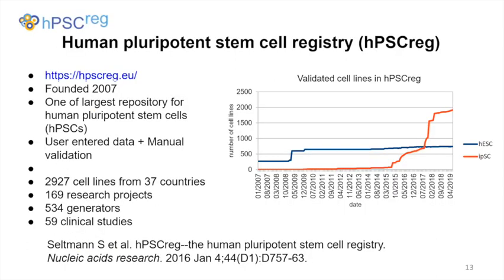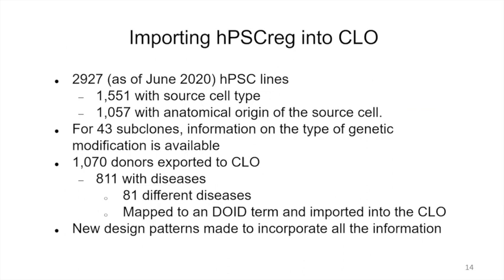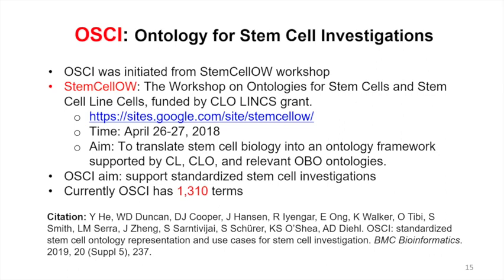With that resolved, we could add a large number of stem cell line cells into the Cell Line Ontology. We have been working with the Human Pluripotent Stem Cell Registry from Germany, with Stephanie, on this project. By doing so, we were able to incorporate a lot of cells. We also worked on an extension called the Ontology for Stem Cell Investigation, with workshops and use of design patterns. This is another extension and synchronization effort.